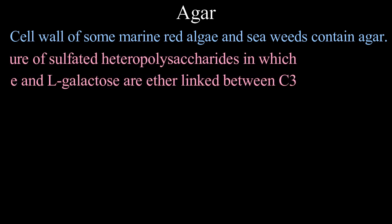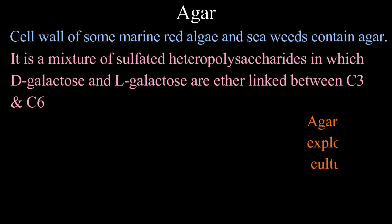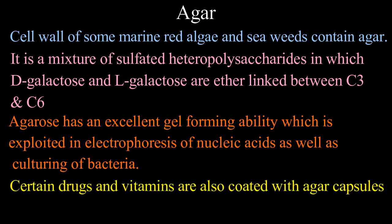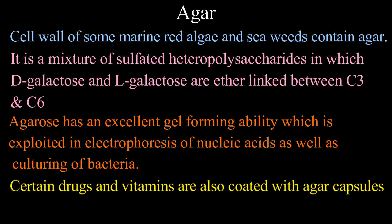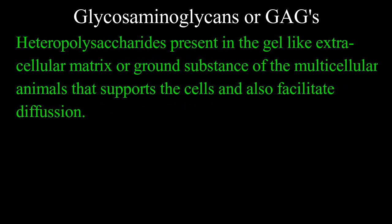Agar: the cell wall of some marine red algae and seaweeds contains agar, which is a mixture of sulfated heteropolysaccharides in which D-galactose and L-galactose are ether-linked between C-3 and C-6. Agar consists of linear unbranched agarose and branched agaropectin. Agarose has an excellent gel-forming ability, which is exploited in electrophoresis of nucleic acids as well as culturing of bacteria. Certain drugs and vitamins are also coated with agar capsules, which dissolve easily in the stomach and are metabolically inert.